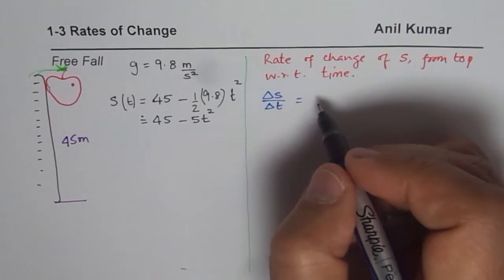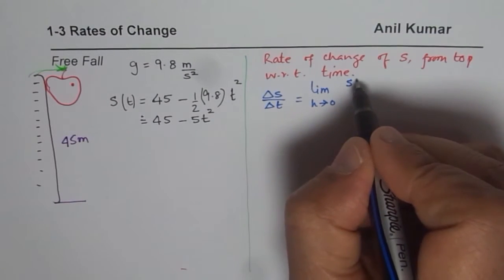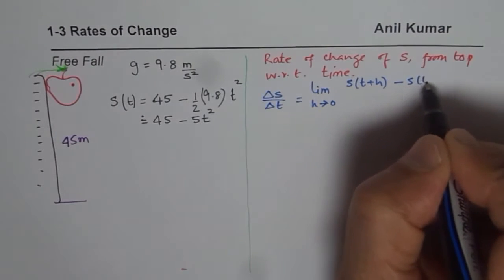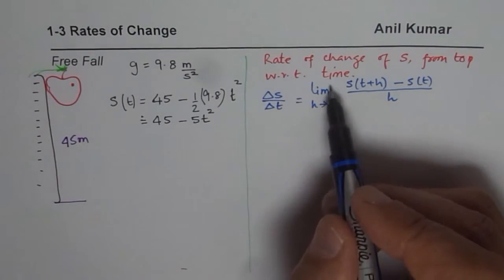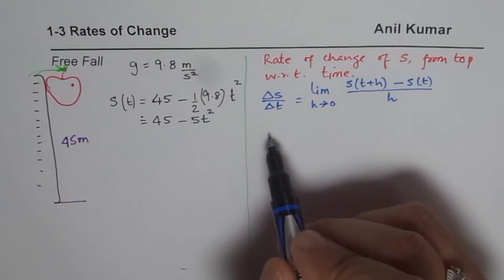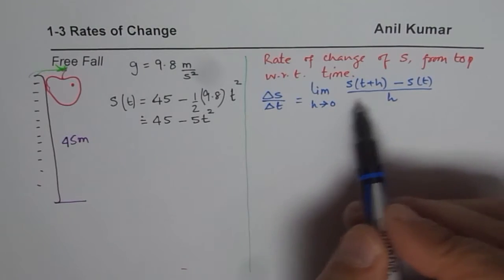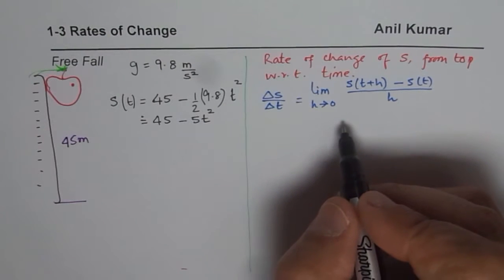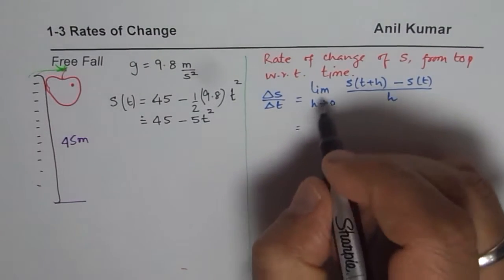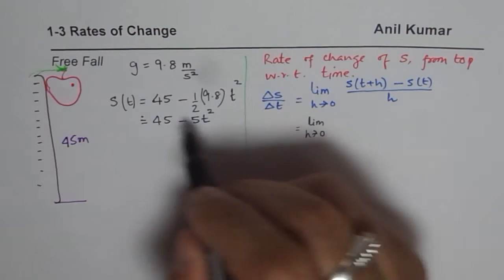That rate of change can be found using the limit concept. We write: limit as h approaches 0 of [s(t + h) minus s(t)] over h. This gives us the instantaneous rate of change of height with respect to time. When h approaches 0, we get a very, very small difference in time, yielding the instantaneous rate of change. We now substitute our formula into this expression.